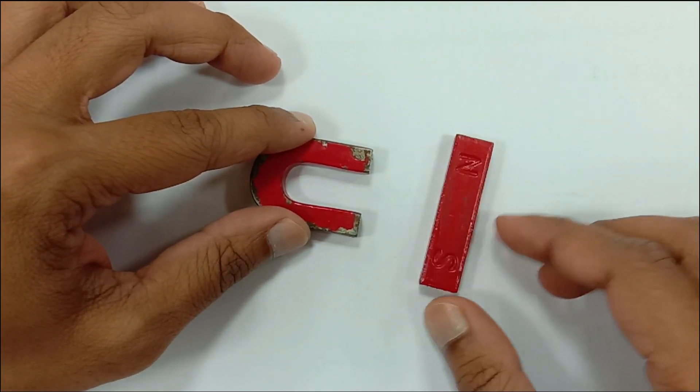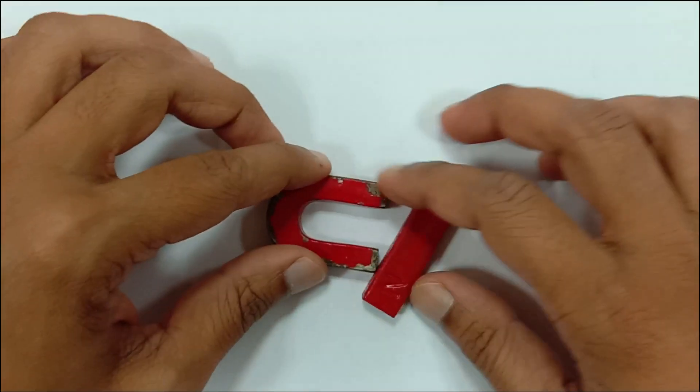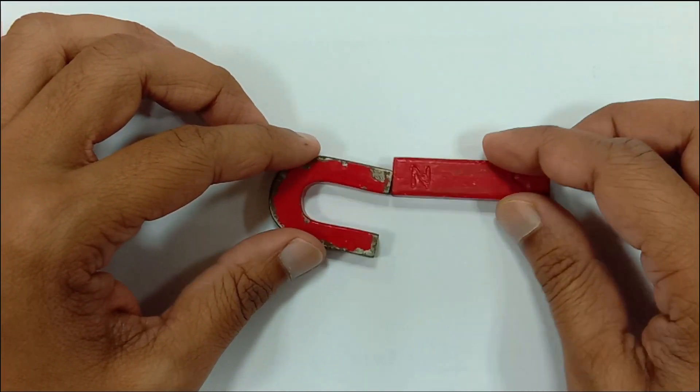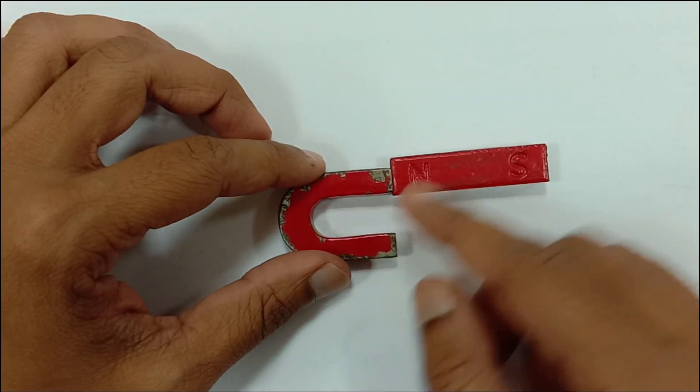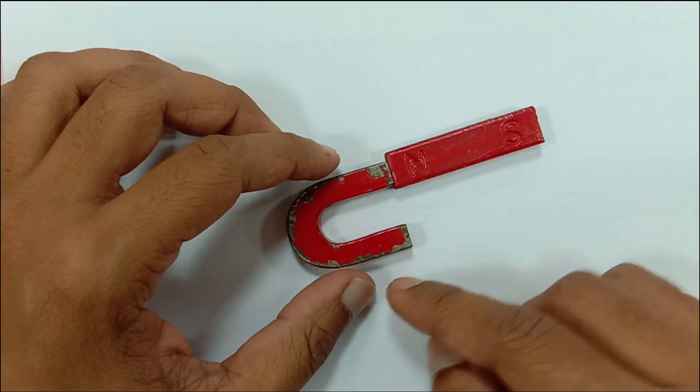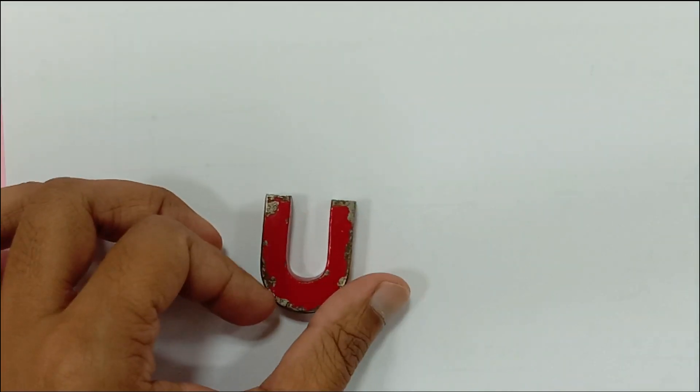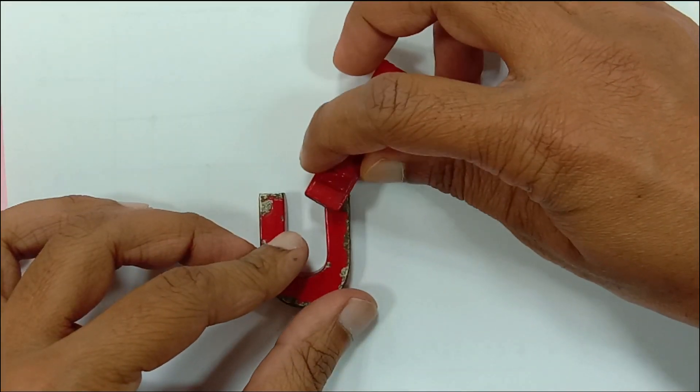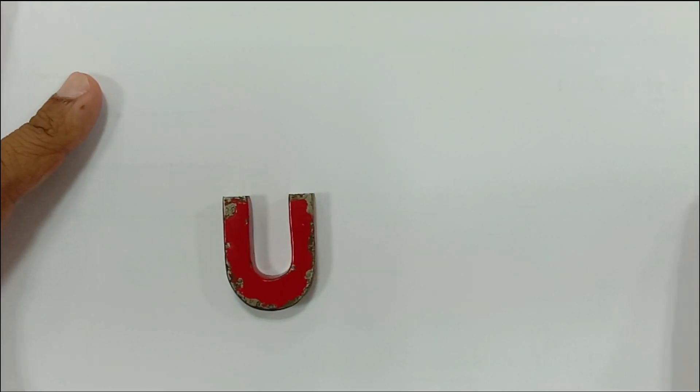And as this one is trying to get away from me that means north and north both are repelling, so this is the north pole and as you can see this is the south pole. So I know that this is the south pole and this is the north pole, right. So I need to also mark it, this is the south one and this is the north one.